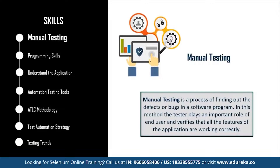The first step is manual testing. Manual testing is a process of finding defects or bugs in a software program, where the tester plays the important role of end user and verifies that all features of the application are working correctly. This makes clear that automation testing is best suited for experienced manual testers.